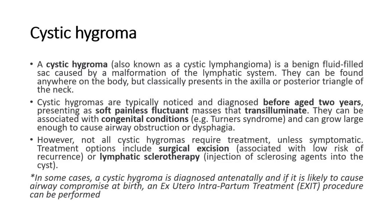First, cystic hygroma. A cystic hygroma, also known as a cystic lymphangioma, is a benign fluid-filled sac caused by a malformation of the lymphatic system. They can be found anywhere on the body, but classically present in the axilla or posterior triangle of the neck. Cystic hygromas are typically noticed and diagnosed before age 2 years, presenting as soft painless fluctuant masses that transilluminate. They can be associated with congenital conditions like Turner's syndrome, and can grow large enough to cause airway obstruction or dysphagia. However, not all cystic hygromas require treatment unless symptomatic.